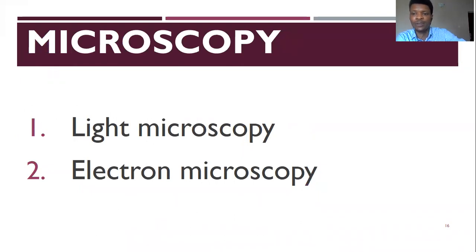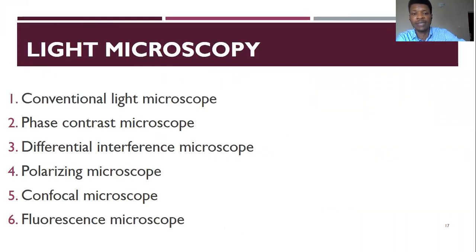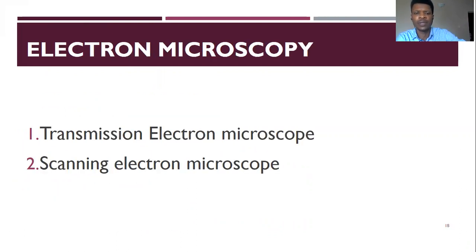Now we go to microscopy. You've finished staining and want to view under the microscope. There are two types of microscopy: we have the light microscope and the electron microscope. Under the light microscope, you have the conventional light microscope, phase contrast microscope, the differential interference microscope, polarizing microscope, confocal, and also fluorescence microscope. Under the electron microscope, we have two types: transmission and the scanning electron microscopes.